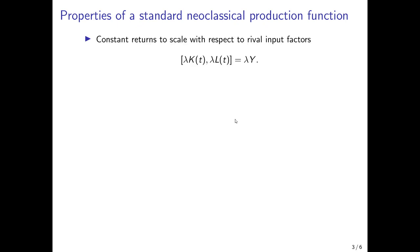A neoclassical production function fulfills three properties. The first is that it has constant returns to scale with respect to the rival input factors. Mathematically, this means that if I increase the employment of both rival production factors by a factor lambda, then output also increases by that factor lambda.